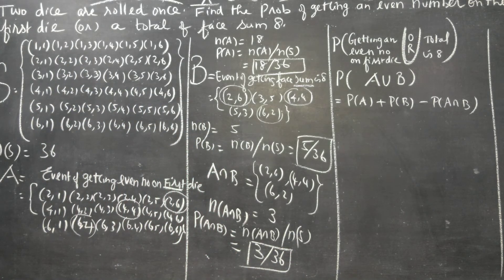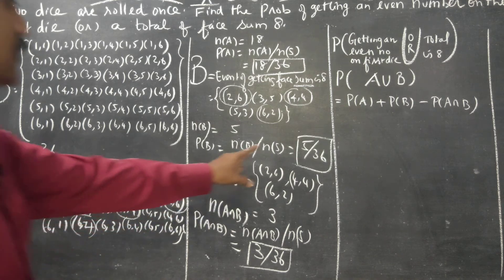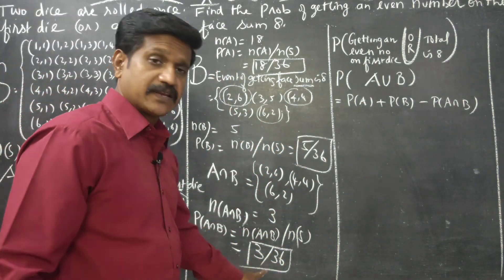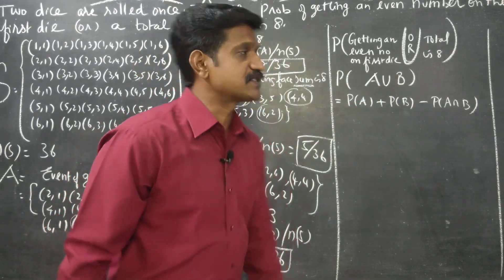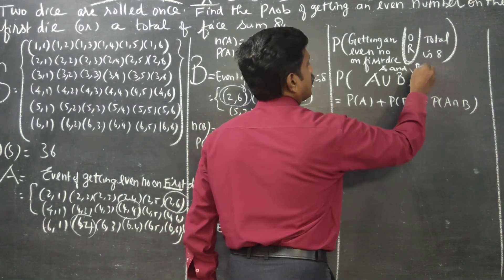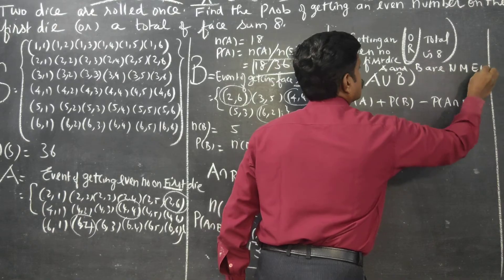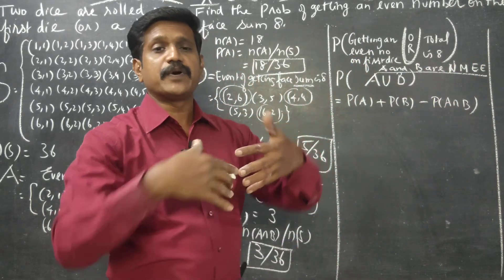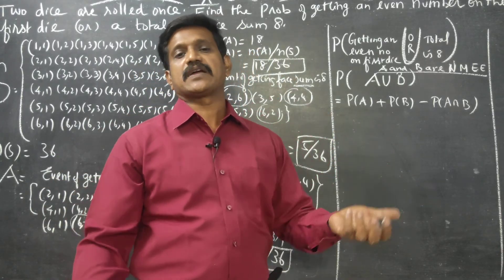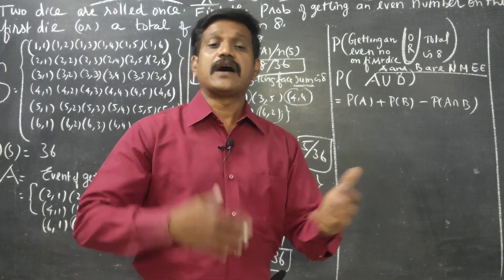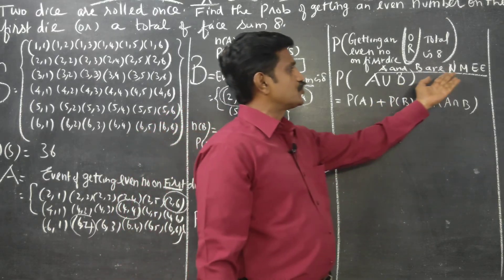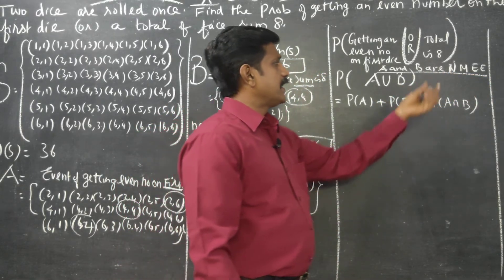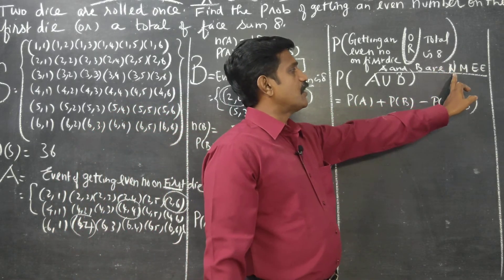So P(A) = 18/36, P(B) = 5/36, and P(A∩B) = 3/36. Since A∩B is not empty — there are common elements — A and B are not mutually exclusive events. Therefore we use the full addition theorem formula.